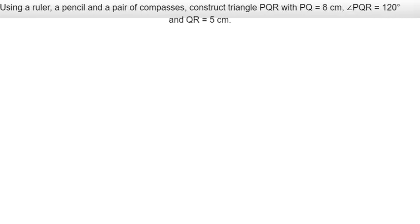January 2018, question 3b. The question reads: Using a ruler, a pencil, and a pair of compasses, construct triangle PQR with PQ equals 8 cm, angle PQR is equal to 120 degrees, and QR is equal to 5 cm.